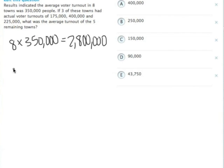We know that the 3, and let's just start dealing with just the hundreds of thousands without all the zeros. We'll save ourselves a little trouble. The actual voter turnout in 3 of the towns was 175,000, 400,000, and 225,000. Add those all together, it equals 800,000. All of these just pretend that there's 3 more zeros after everything. So, 3 of the 8 towns were 800,000.